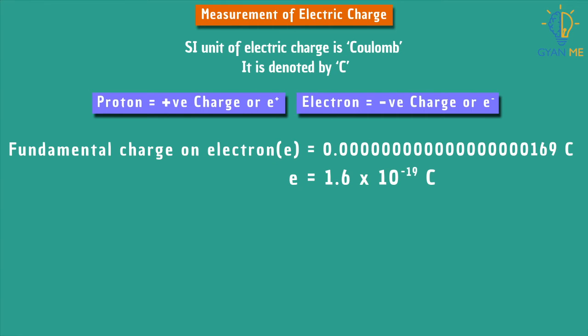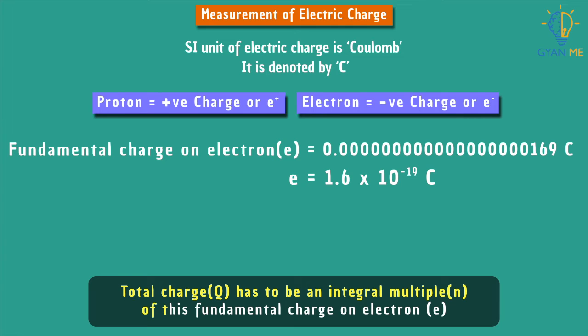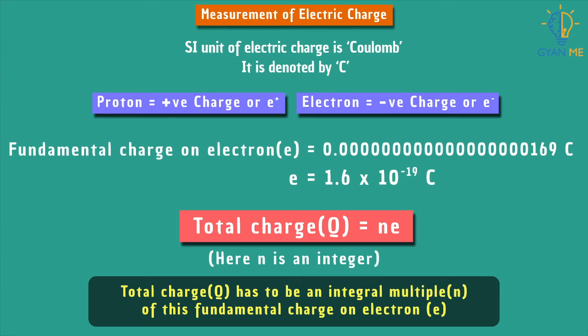Remember students that total charge has to be an integral multiple of this fundamental unit of charge. That is, Q = ne, where n is an integer. This implies that n cannot be in fractions or decimals. It is always an integer.